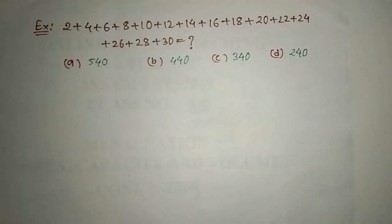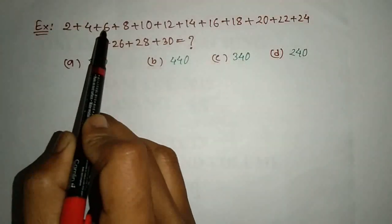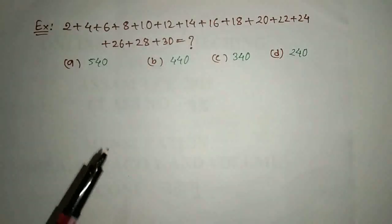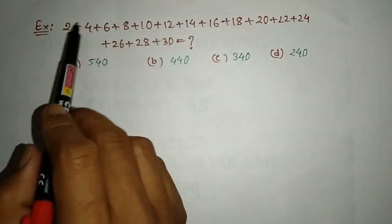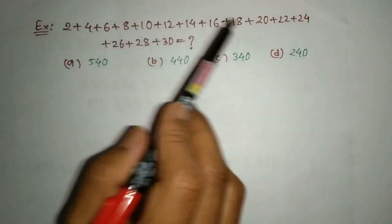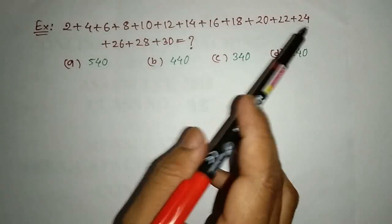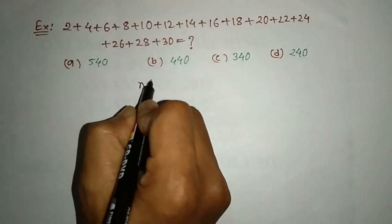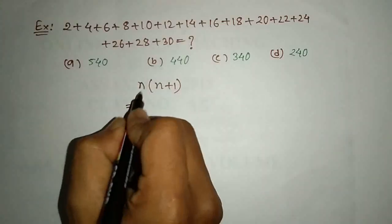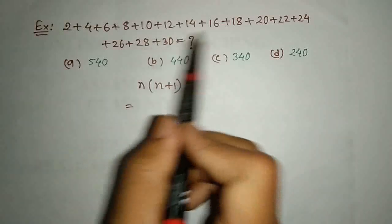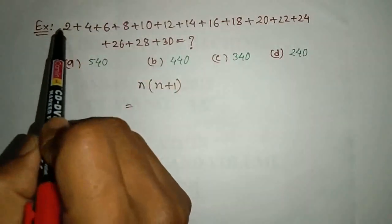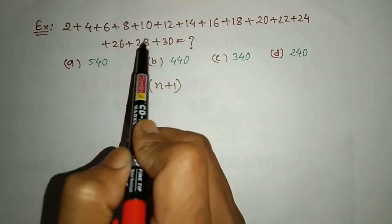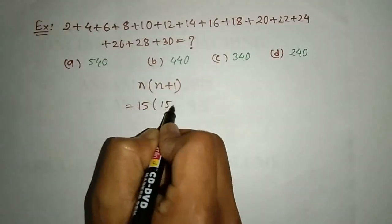Next, there are 2 plus 4 plus 6 plus 8. The formula is n into n plus 1. Then there is x equal to n plus 1. The formula tells x equal x at n plus 1.